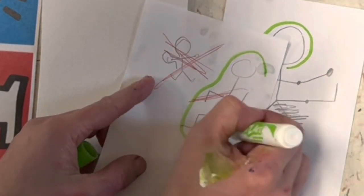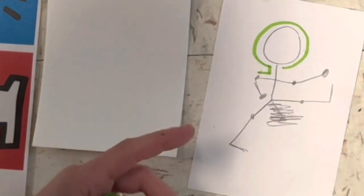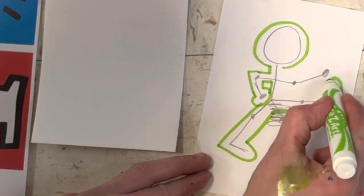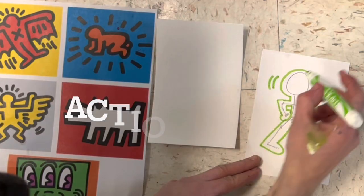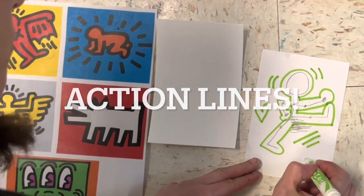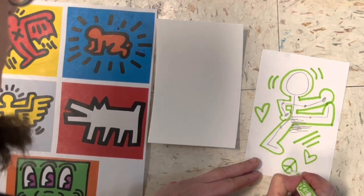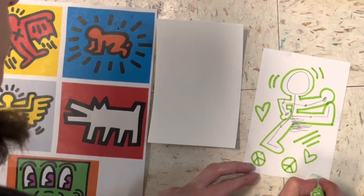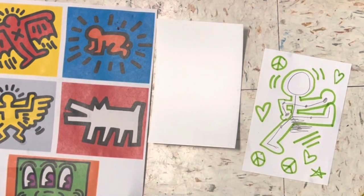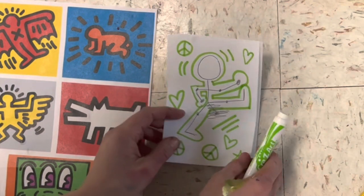Then you're going to trace around your stick figure. When I say trace around, I don't mean make a blob, I mean stick close to the edges so that you can really see the shape of your figure. Around your figure in the empty space, you can make some action lines. This is something Keith did to show motion. You can also add some symbols and other stuff. Just don't write words because any words you write will end up backward.